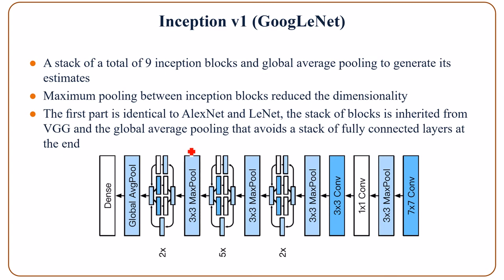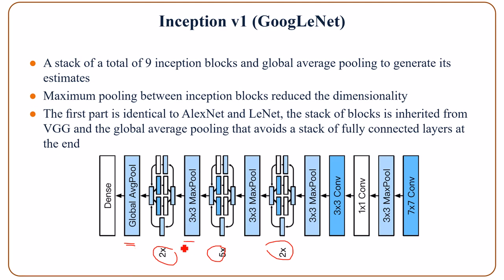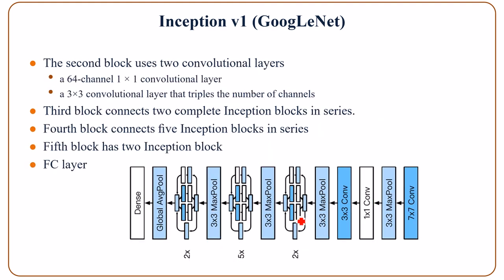Looking at the whole architecture, we see a stack of a total of 9 inception blocks — two here, five here, and two there — as well as a global average pooling layer. There are maximum pooling layers in between inception blocks, which are used for reducing the dimensionality. The first path is very much like in AlexNet and LeNet; how blocks are used is inherited from VGG; the global average pooling layer is used to avoid a stack of fully-connected layers. This slide shows some more description regarding the blocks in the architecture.